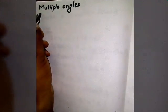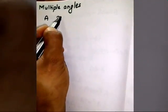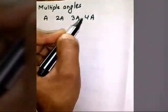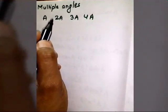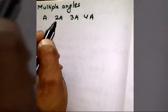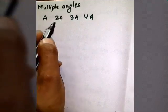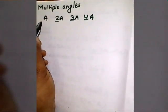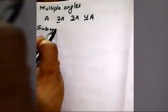Let's understand the meaning of multiple angles. Suppose we have angle A — the multiples of A can be 2A, 3A, 4A, or any number multiplied by A such that the number is greater than 1. It must be a positive number. For example, 2, 3, 4 are all multiples. These are called multiples.